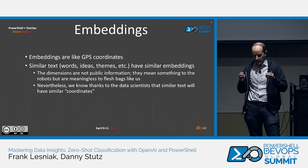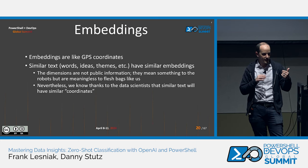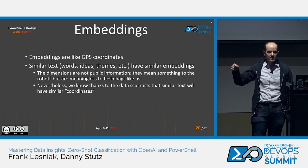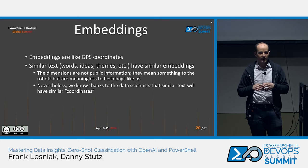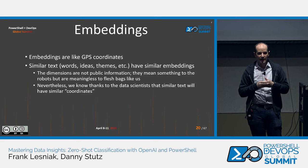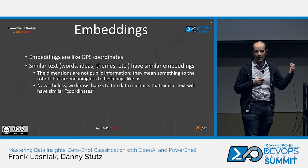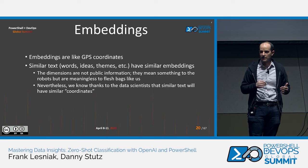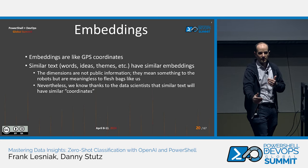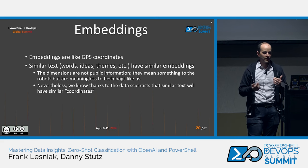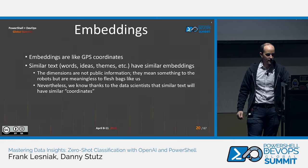The whole talk is really predicated on this idea that similar text or similar ideas and themes have similar embeddings. I have no way to prove that because the embeddings model used by OpenAI is not public information — there's no way to really reverse engineer it. So we can't prove this, but it's a data science principle that we are going to assume is true for this talk. We're going to assume that similar text has similar coordinates.